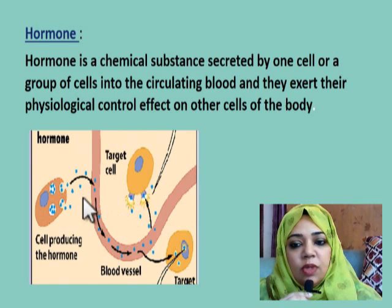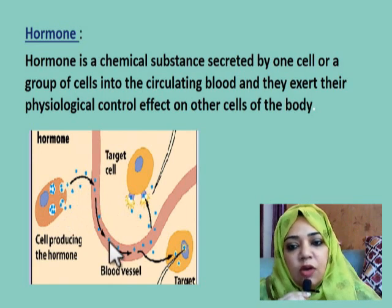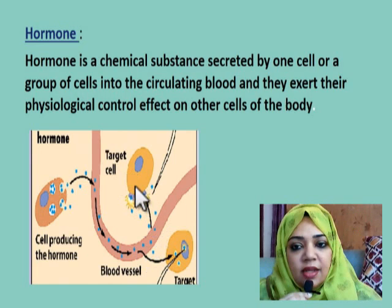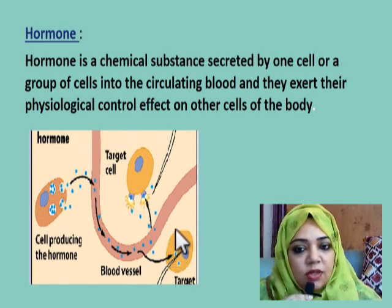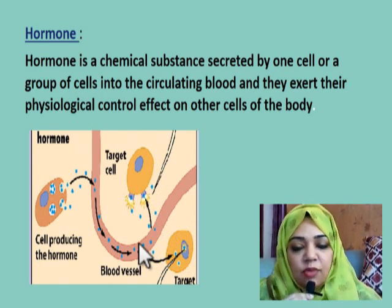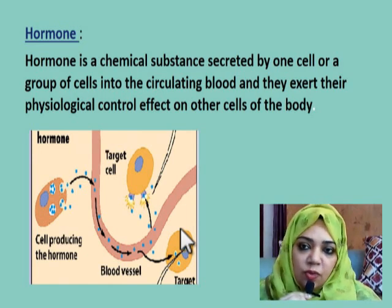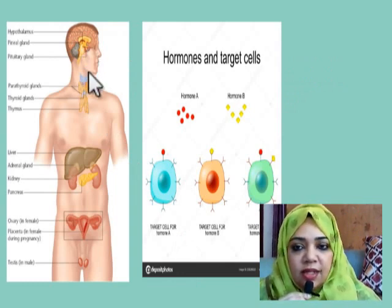In the target cell there are receptors for these hormones. The gland secretes the hormone into the circulating blood, the hormone circulates with the blood, and when it finds its target cell it goes and binds with the receptor on that target cell, initiating cell reactions. Another cell that has no receptors is not a target cell for this hormone. So every hormone has a target cell which has specific receptors for that hormone.